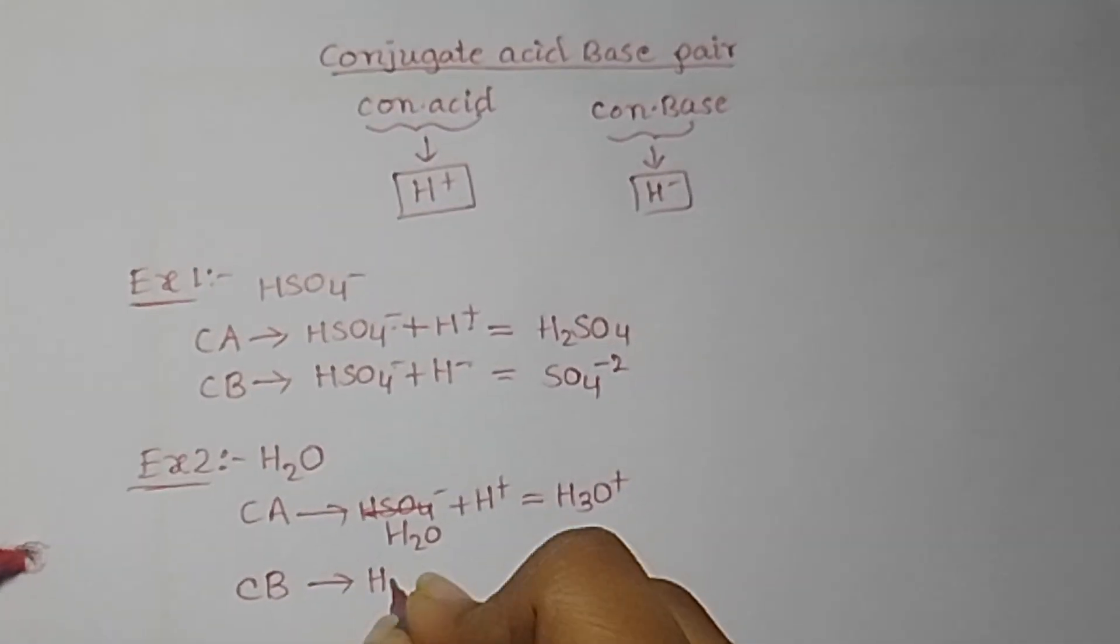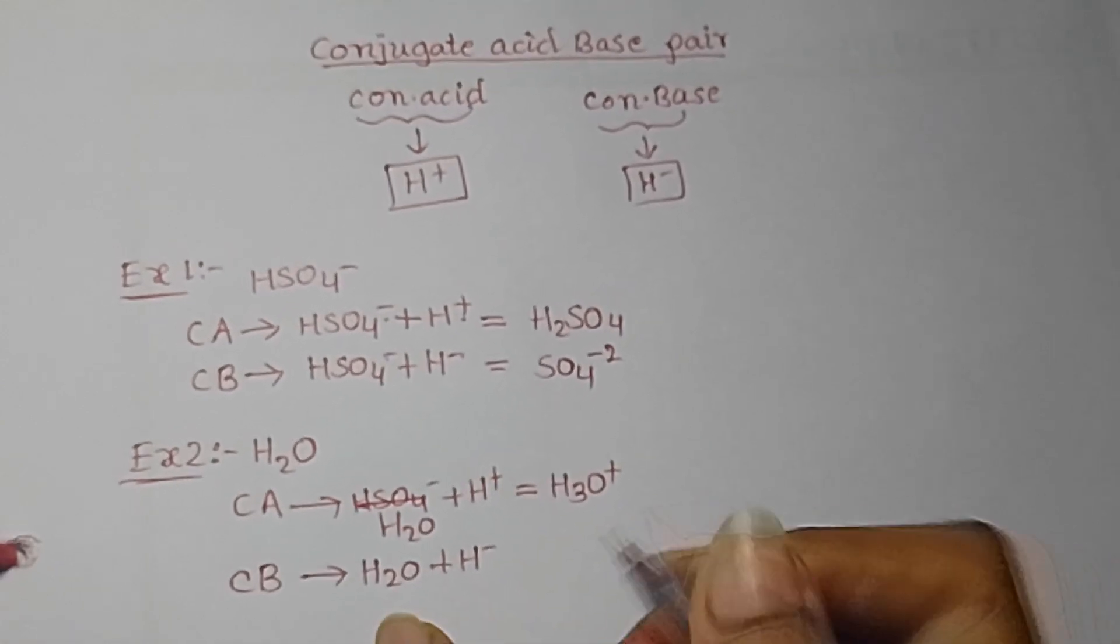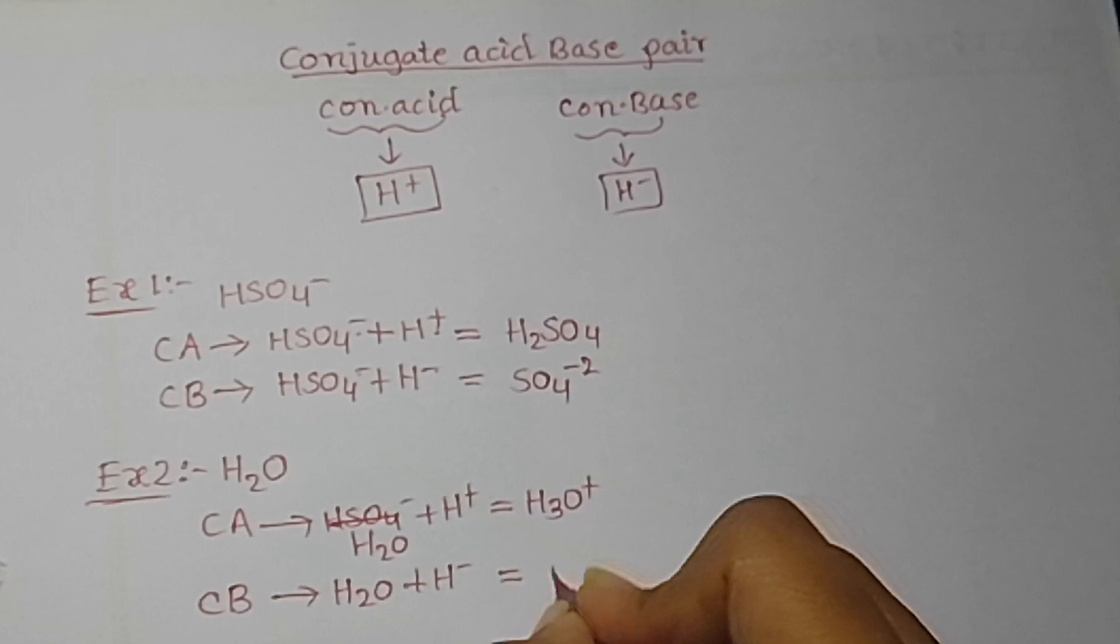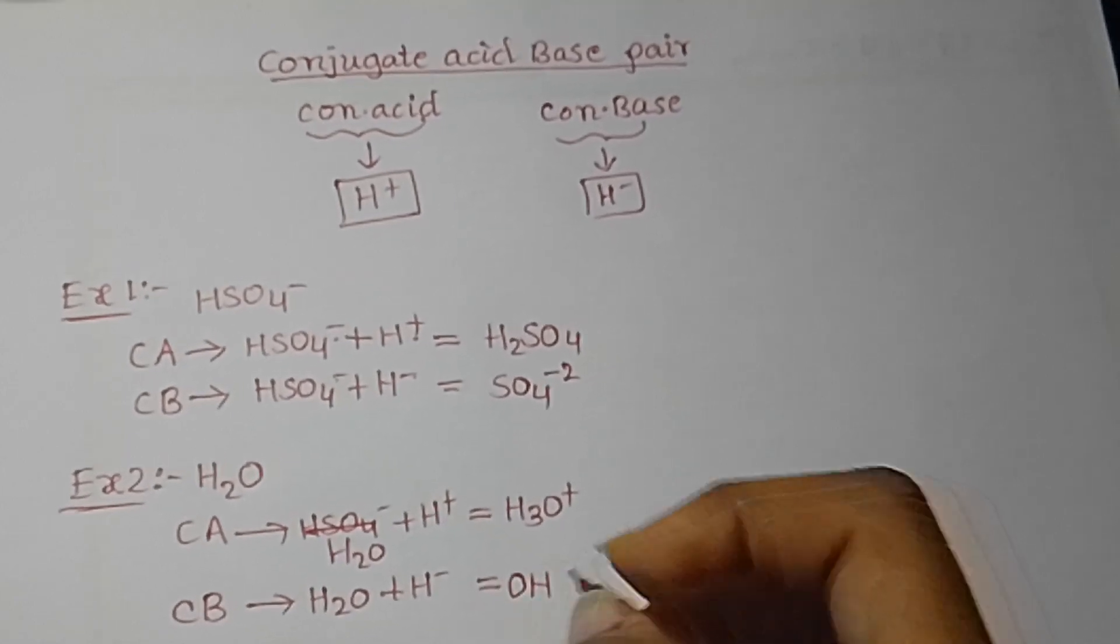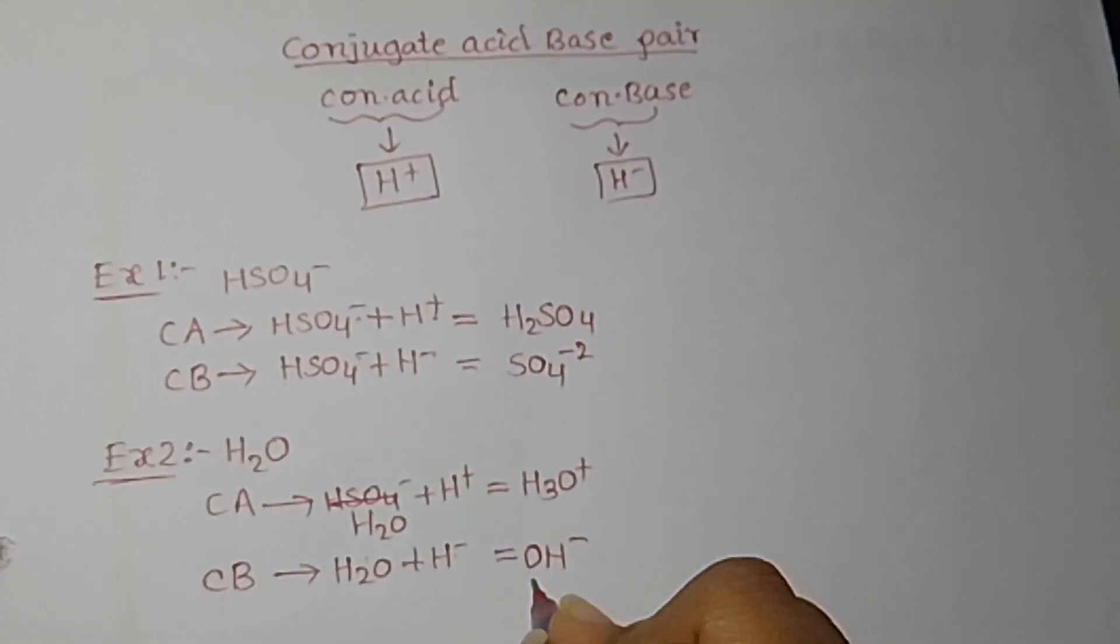Similarly, conjugate base: H2O plus H minus means one hydrogen is subtracted. So what will we get? OH minus. Here there's zero charge on H2O, here minus 1 charge, so minus 1.